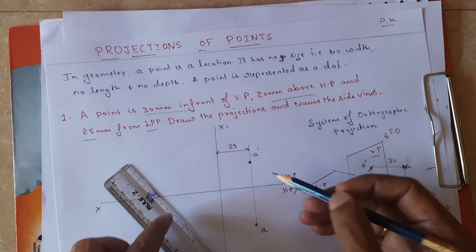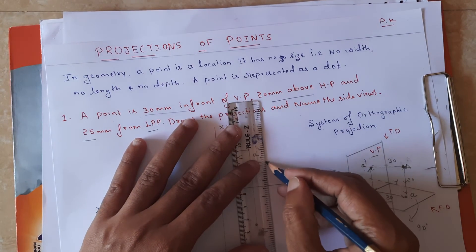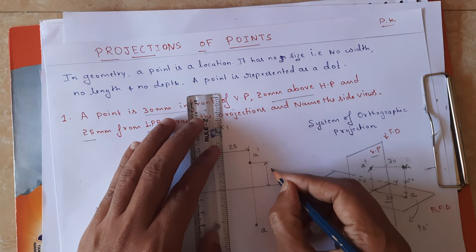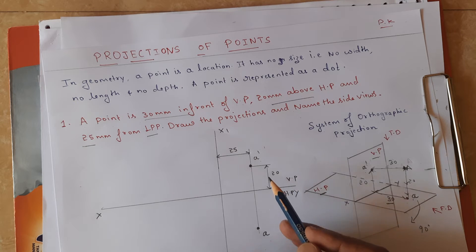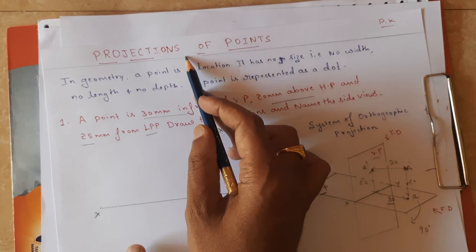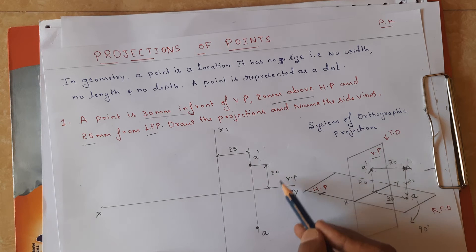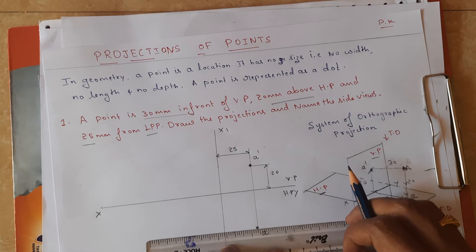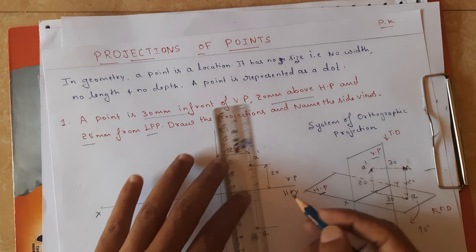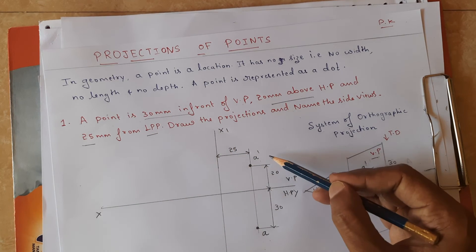Now please pay attention on how to draw the dimension lines. We are solving problems on projection of points — only the points must be dark, whereas the XY line, X1Y1 line, and all reference lines must be thin lines. Dimension lines must be at a distance of minimum 10 mm from the actual sketch. The front view is 20 mm from the XY line, and the top view is 30 mm from the XY line.